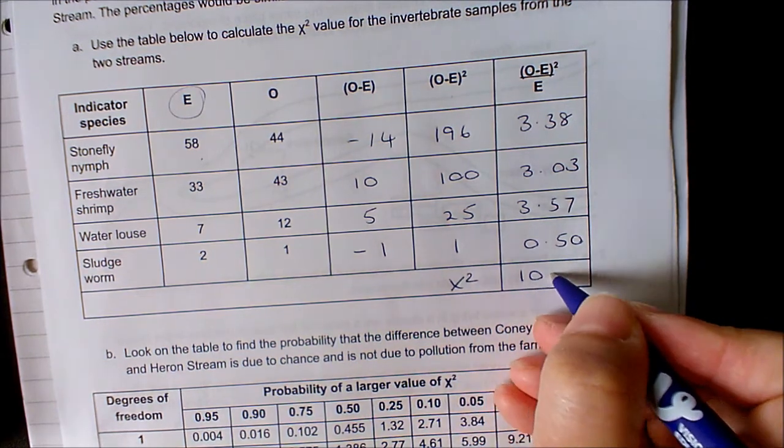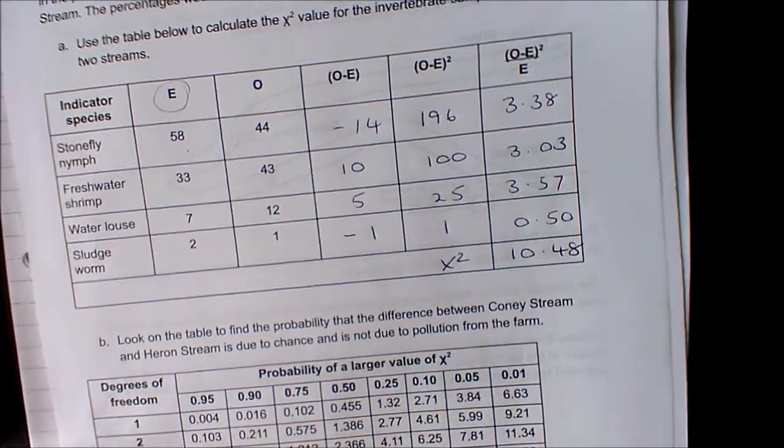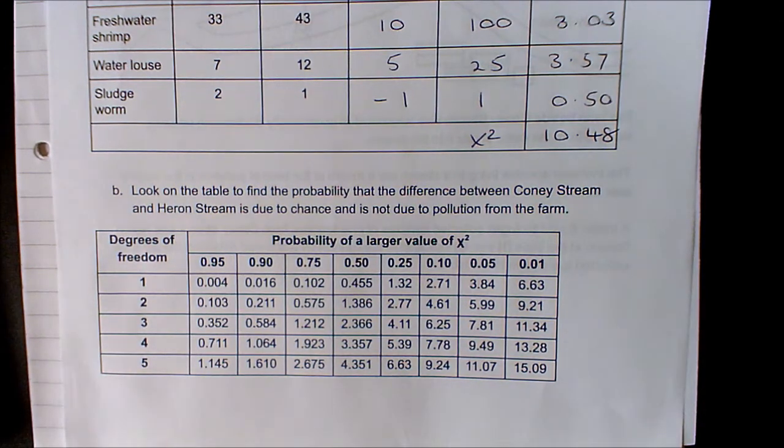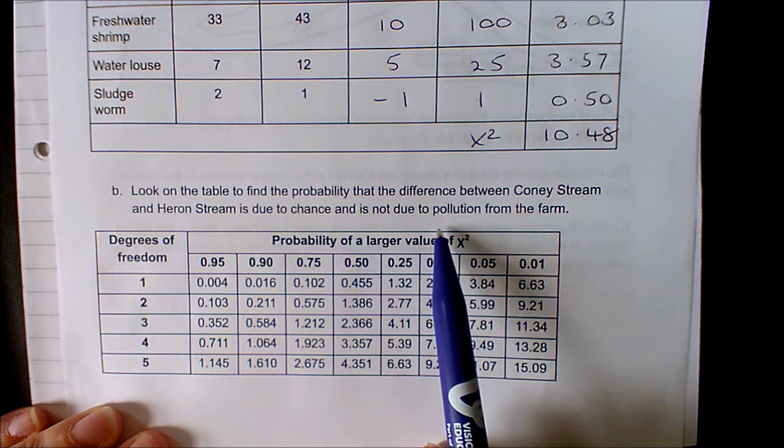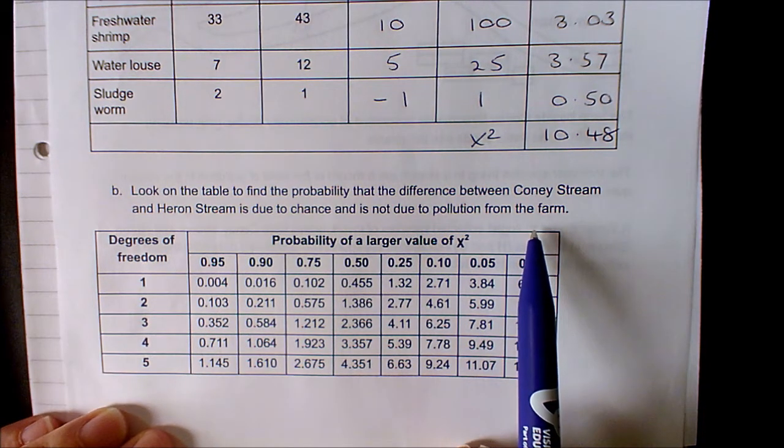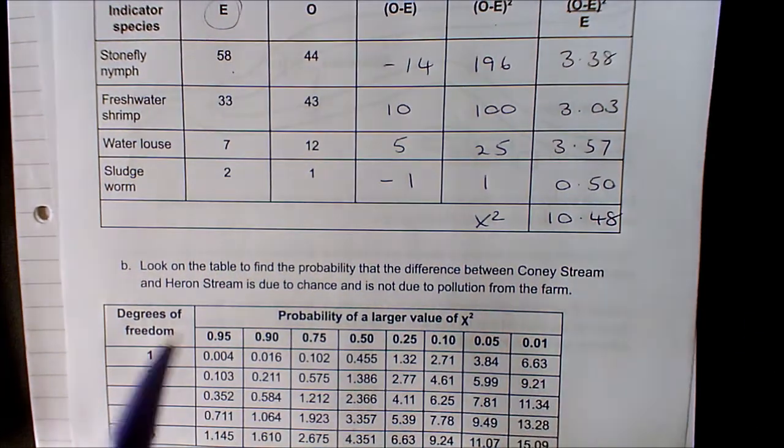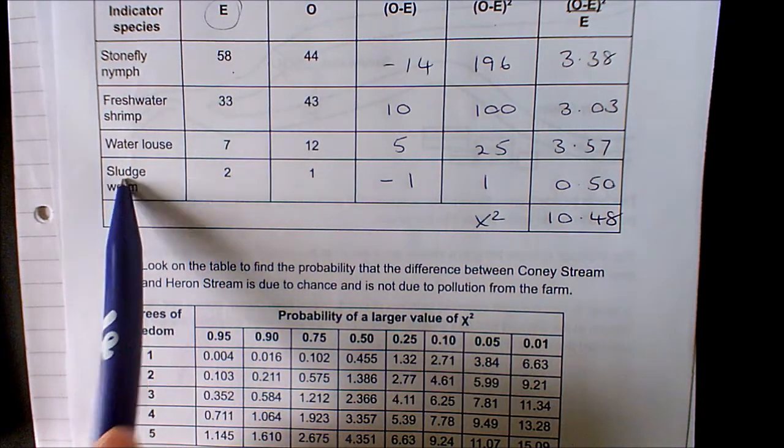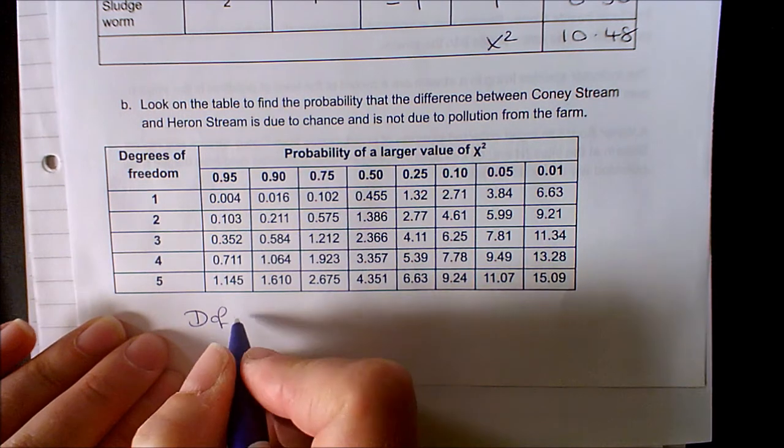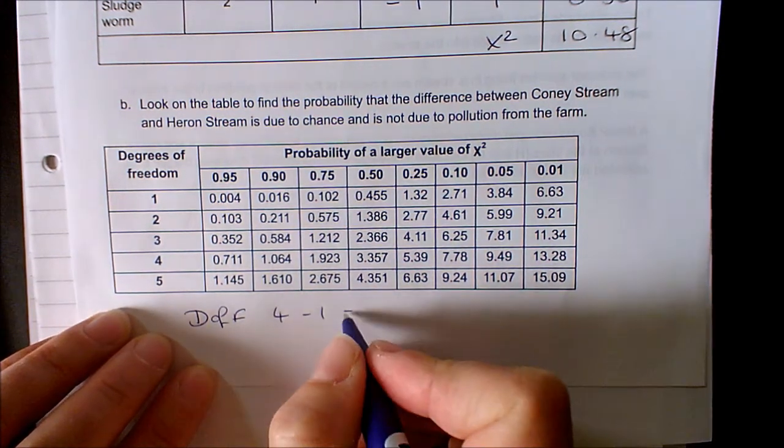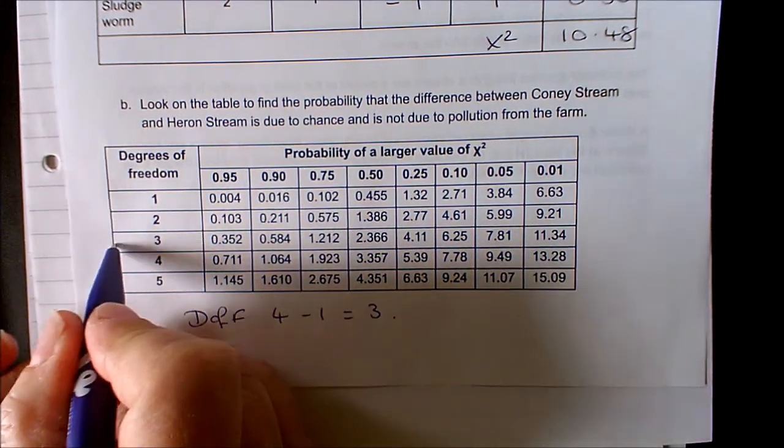Now it says to look at the table below to find the probability that the difference between the streams is due to chance and not due to pollution from the farm. So first we work out our number of degrees of freedom. We have four categories—one, two, three, four—so degrees of freedom equals four minus one, which gives us three.